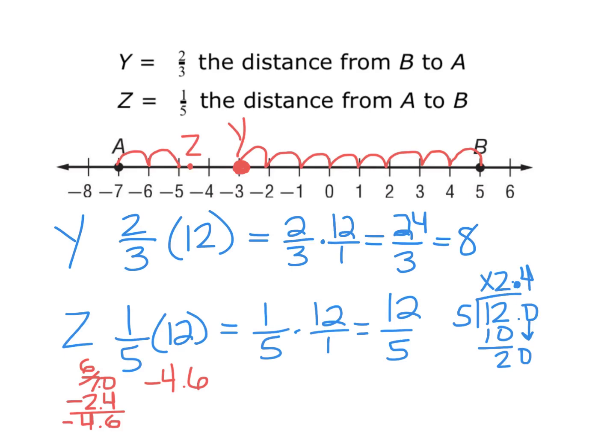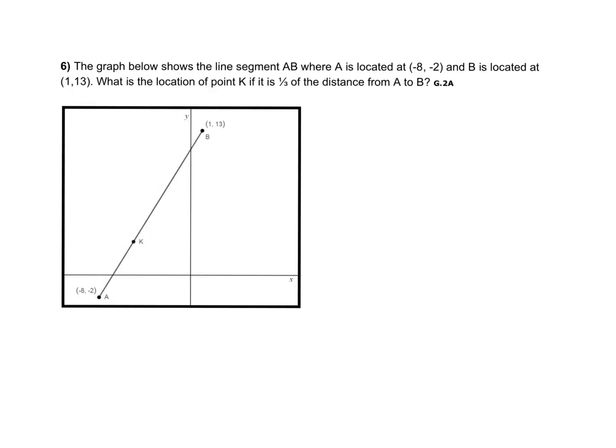Now let's look at how we can calculate fractional distance on a coordinate plane. In this example, the graph shows line segment AB, where A is located at (-8, -2) and B is located at (1, 13). The question asks: what is the location of point K if it is one-third of the distance from A to B? I want to look at the horizontal distance and the vertical distance between these two points.